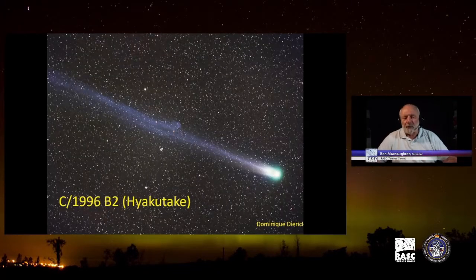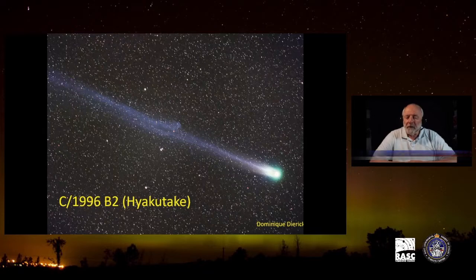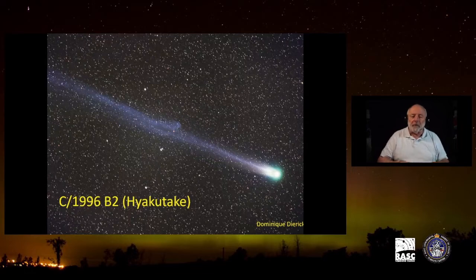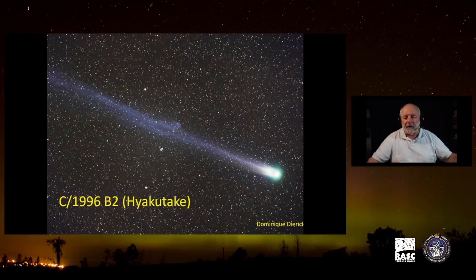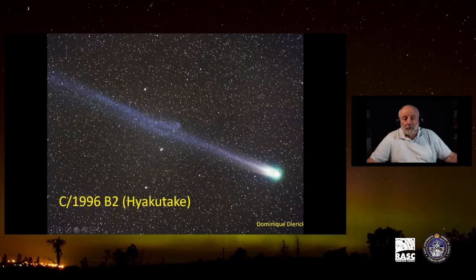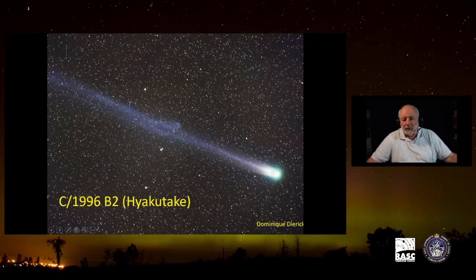My favorite comet to observe was Yakutaki. And it was discovered, the symbol for the comet shows the date it was discovered, 1996, and the B stands for the second half of January. Several things are amazing about it. One is the tail probably extended about half the sky. It was just incredible how long it was, because this comet came particularly close.